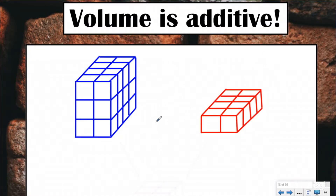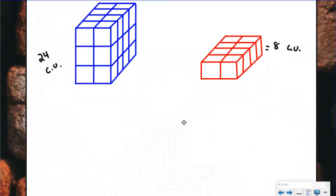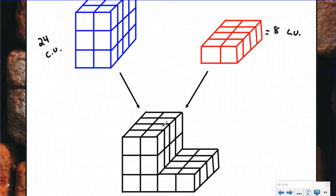To demonstrate this, we have two different regular rectangular prisms and we're going to find the volume of each. I'm going to find the area of the base — one, two, three, four, five, six, seven, eight. I have three layers of eight, so my volume here is 24 cubic units. The second prism is just one layer of eight, so its volume is 8 cubic units. If I put those two prisms together, all I need to do is add the blue section — 24 — with the red section — 8 — and the total volume is 32 cubic units.